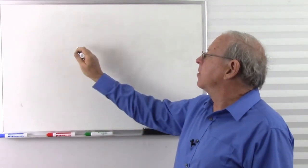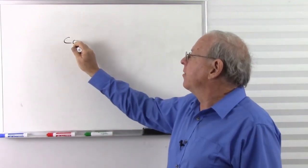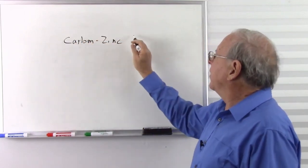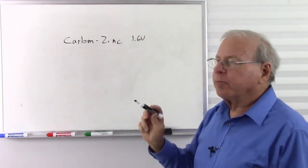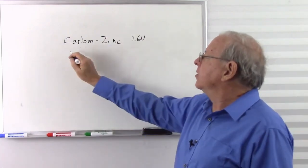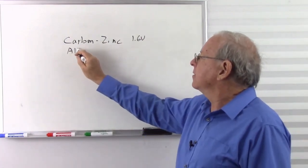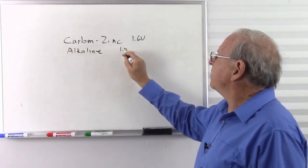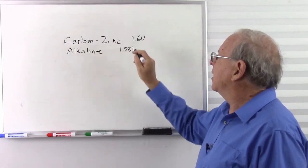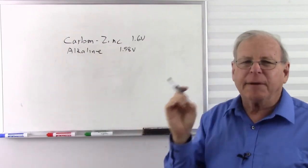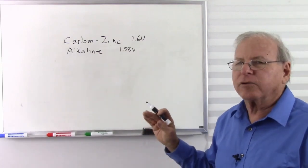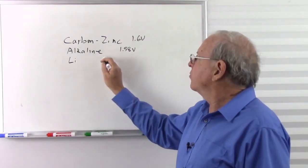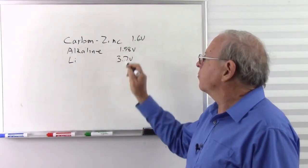Just as an example, a carbon-zinc battery will produce about 1.6 volts per cell. Your alkaline battery will produce 1.58 volts per cell — that's typical, although different companies have different chemistry so you might see a slightly different voltage. Lithium batteries produce 3.7 volts per cell.